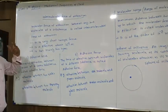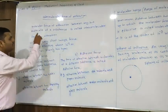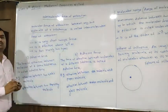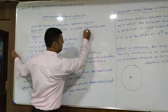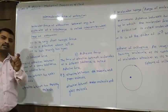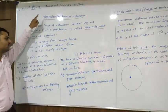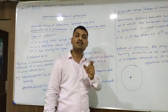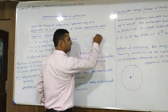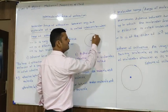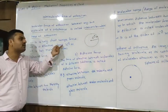The first point is intermolecular force of attraction. Every substance is made up of molecules. The molecular force of attraction between any two molecules of a substance is called intermolecular force of attraction. It is a very short range force because molecules have a radius of 10 raised to minus 9 meters, and this force is effective up to about 10 raised to minus 9 meters.